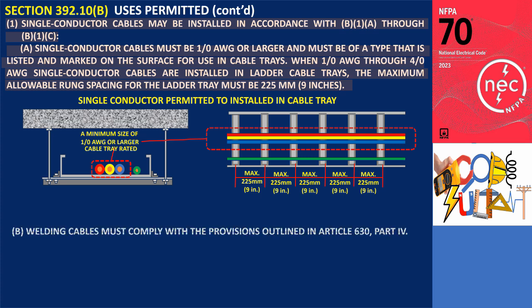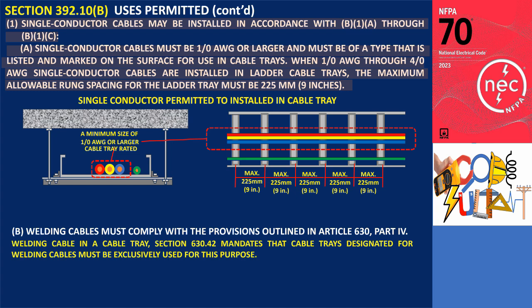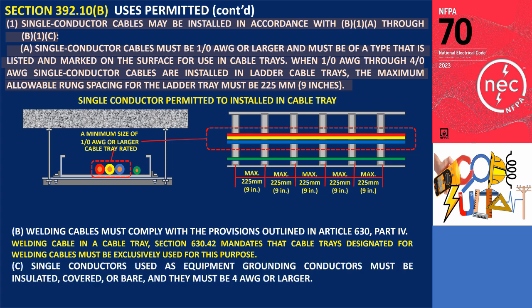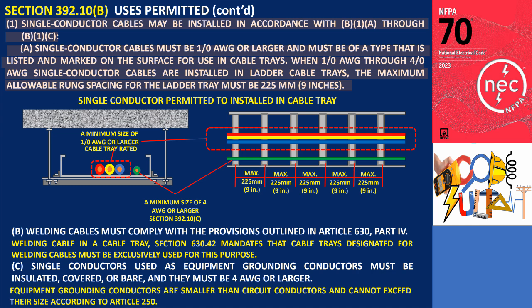Regarding welding cables under B.1(b), they must comply with the provisions outlined in Article 630, Part 4. Section 630.42 mandates that cable trays designated for welding cables must be exclusively used for that purpose. Under B.1(c), single conductors used as equipment grounding conductors must be insulated, covered, or bare, and must be 4 AWG or larger. Since equipment grounding conductors cannot exceed the size of circuit conductors per Article 250, this section permits a minimum size of 4 AWG to be installed in the cable tray.